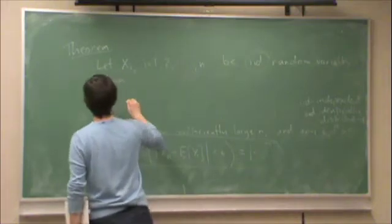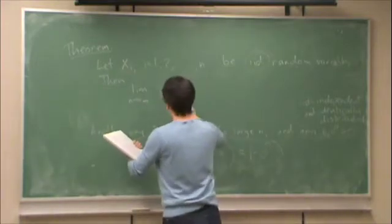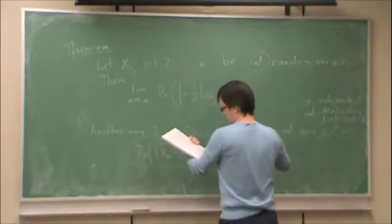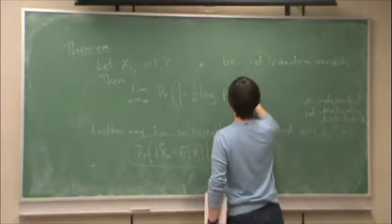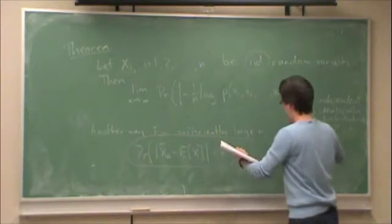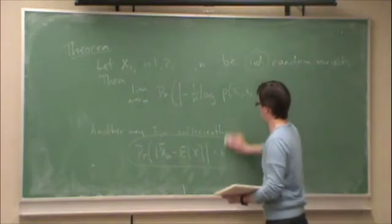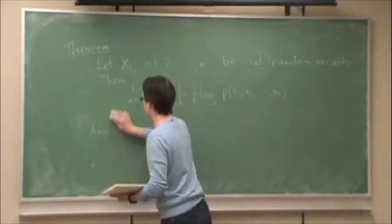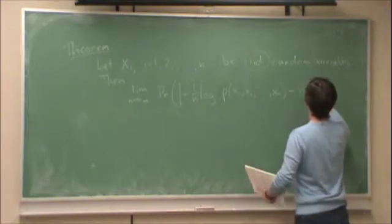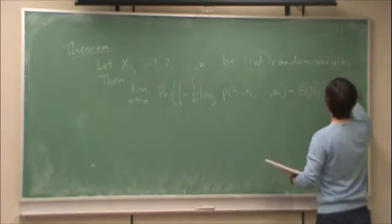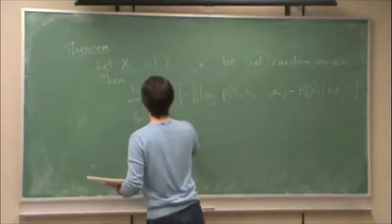Then the limit as N goes to infinity, the probability of the magnitude negative 1 over N log probability, the probability mass function, X1, X2, and so on up to XN, negative 1 over N log probability, this probability, minus the entropy probability less than epsilon is equal to 1 for any epsilon greater than 0.